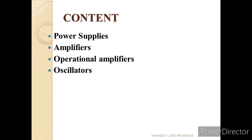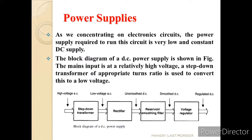First, let us see the content we are going to cover in Electronic Circuit: power supplies, amplifiers, operational amplifiers, and oscillators. Today we'll be concentrating on power supplies. To run the electronic circuit, we need a very low voltage and a constant DC power supply, but in our household we get an AC voltage of 220 volts, which is very high.